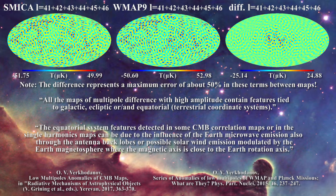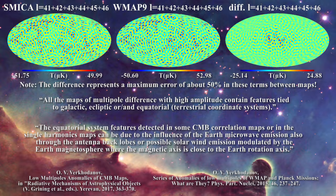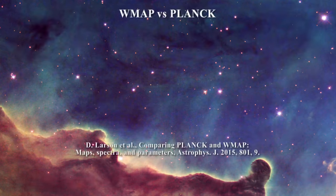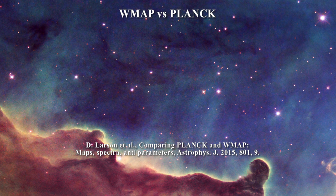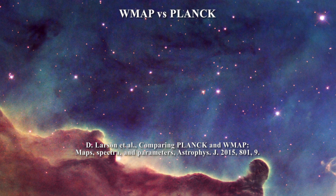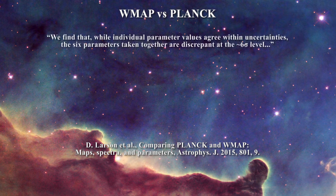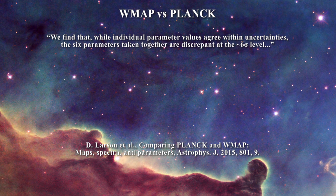We already saw that this was the case with the dipole. The quadrupole value is too low, the alignments are suspect, and the list goes on. Along these lines, it is interesting to note that the WMAP team wrote a paper comparing their findings with those of the Planck satellite. They observed that the WMAP and Planck data are different for L values greater than 100 at the 2.5% level. Most importantly, they assert that while cosmological parameters obtained by the two teams agree on a parameter by parameter comparison, the values are vastly different when considered as a set. They write: 'We find that while individual parameter values agree within uncertainties, the six parameters taken together are discrepant at the six sigma level.'